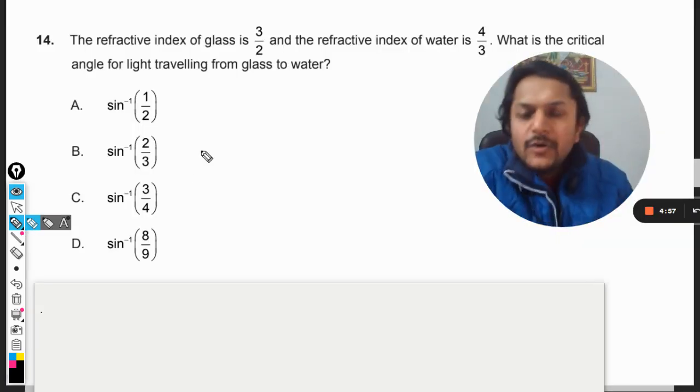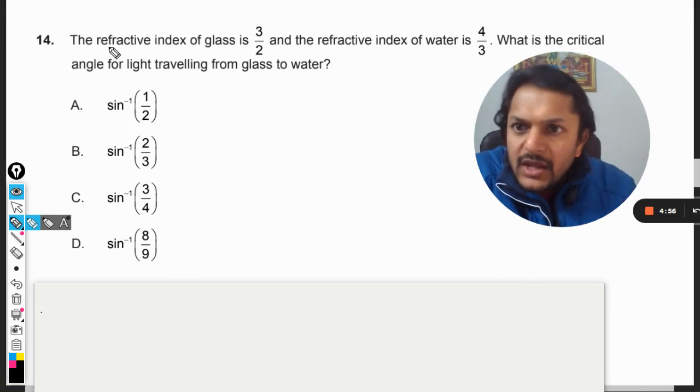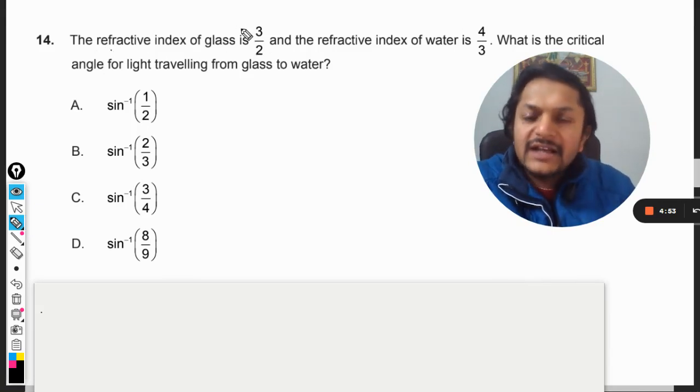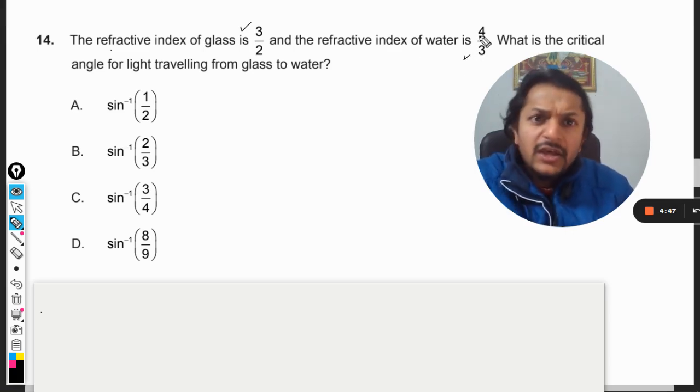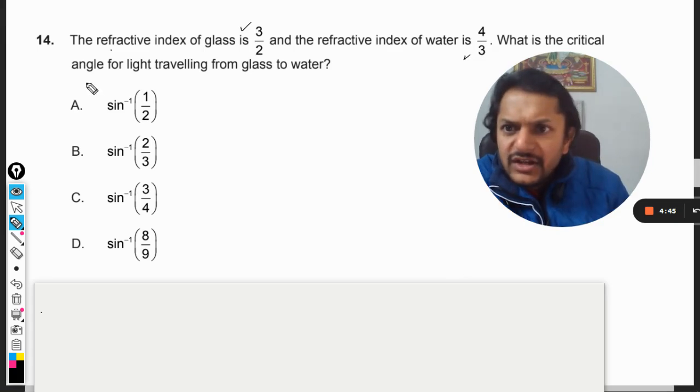Okay dear students, let us see what is there in this question. The refractive index of glass is given as 3 by 2 and the refractive index of water is given as 4 by 3. What is the critical angle for light traveling from glass to water?